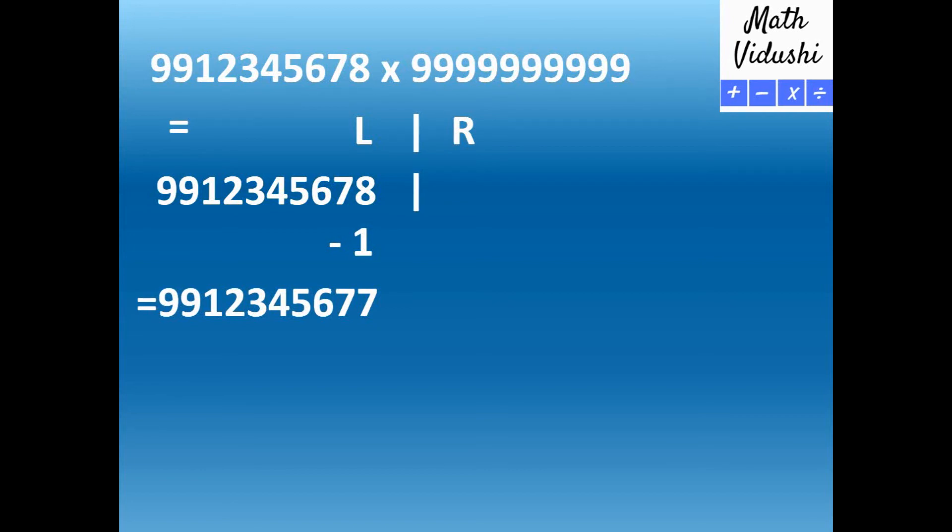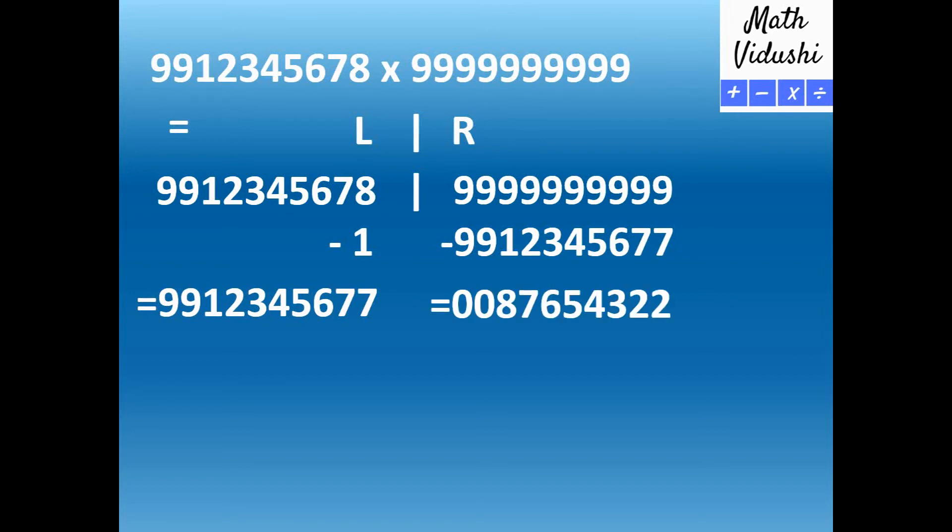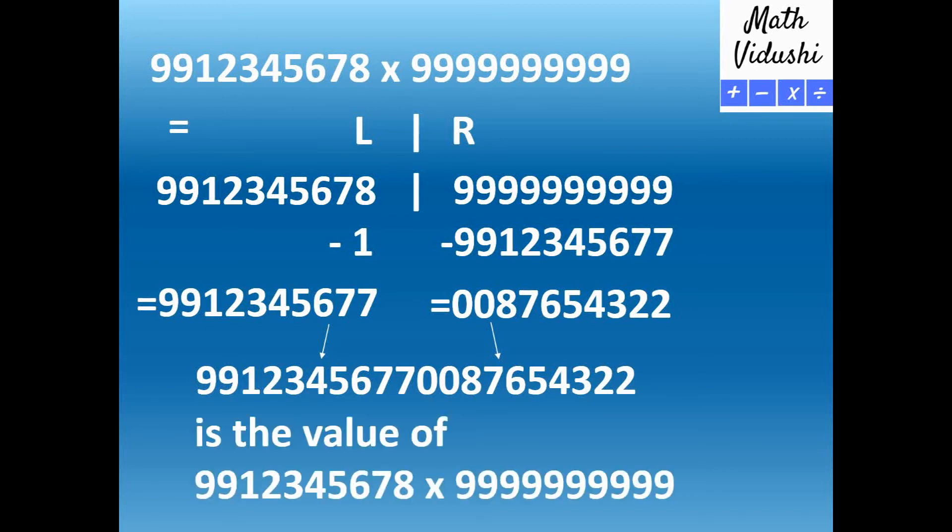Now all you have to do is subtract this answer from the 10 9's and you would get 0087654322. Now you combine the two answers to get the product of the two 10-digit numbers, that is 9912345677 0087654322.